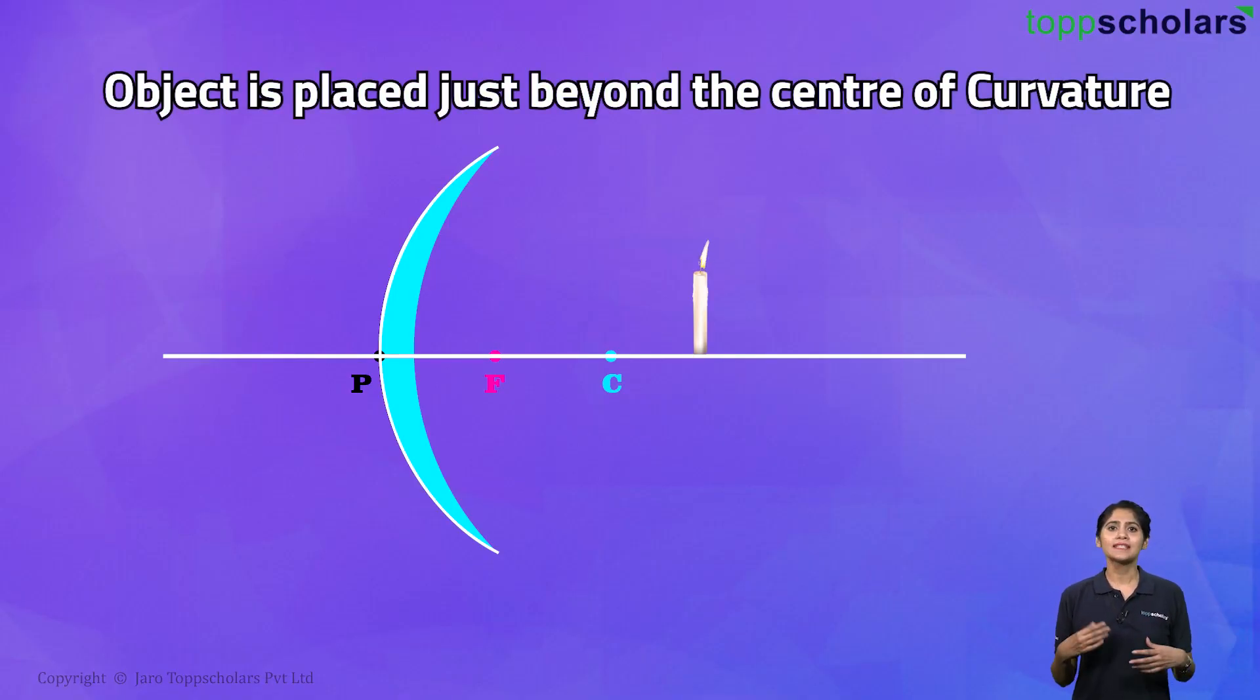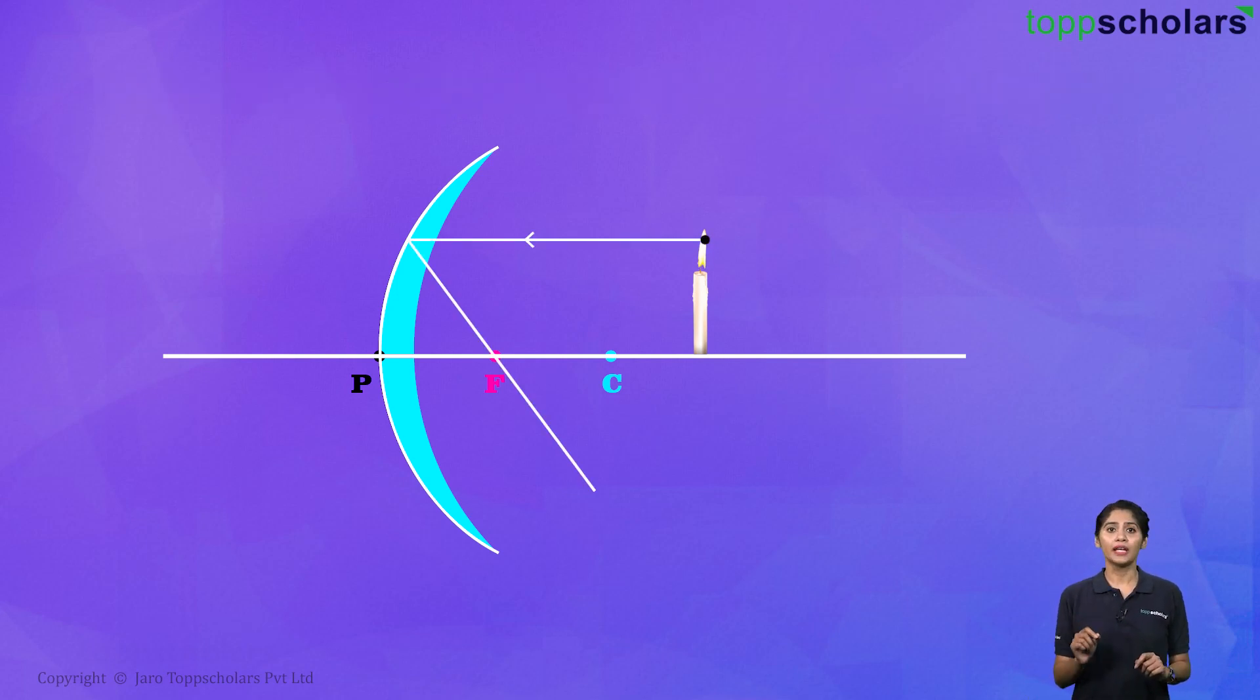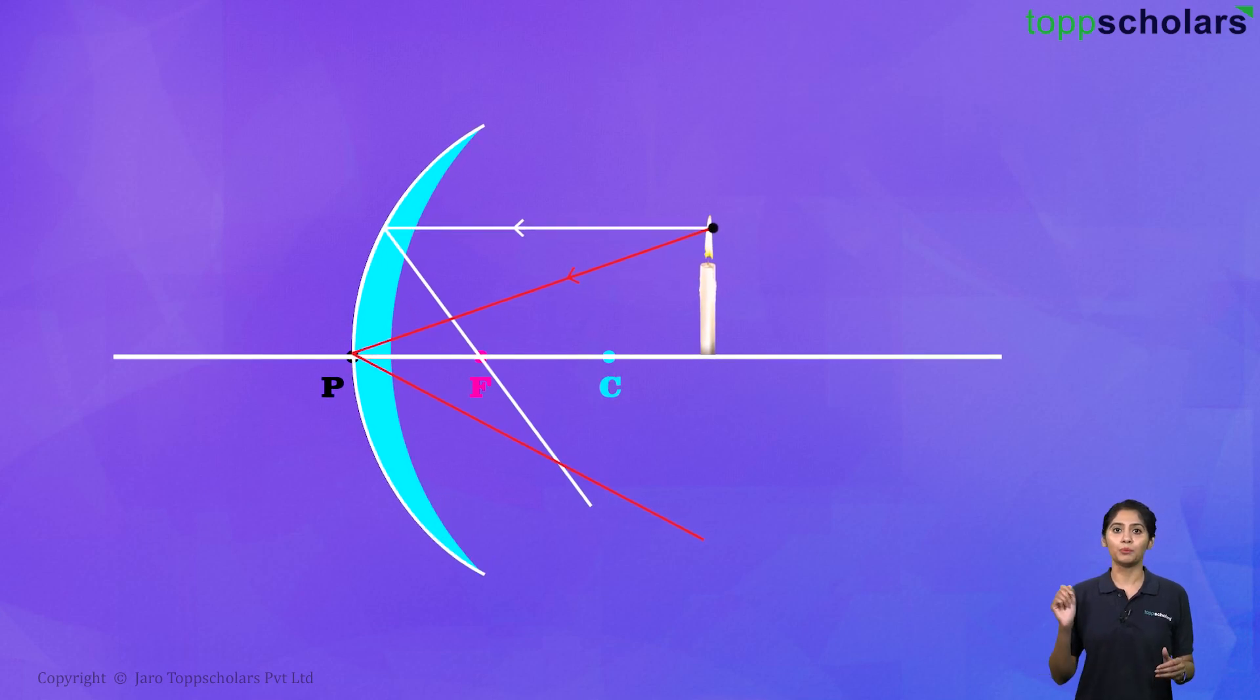Alright, now using the same technique, let's see what happens if we bring our object closer. Let's say the object is somewhat over here. First of all, notice the parallel ray is going to look exactly the same. The ray that is being focused right at the pole, this ray now starts making a bigger angle at the pole. Can you see that?